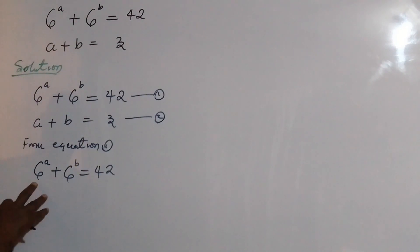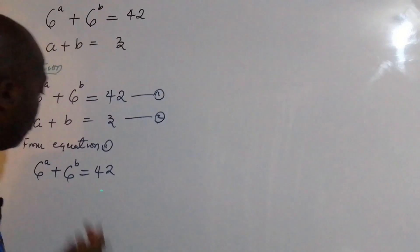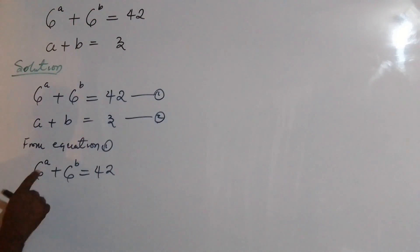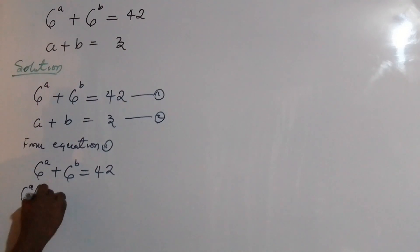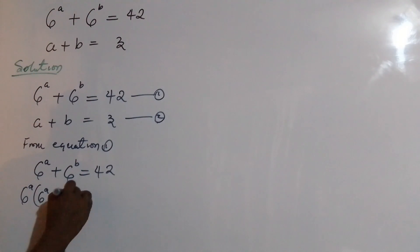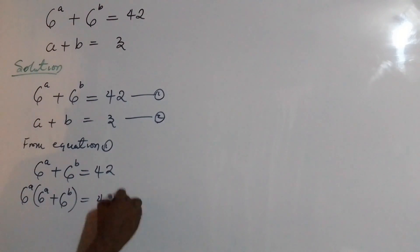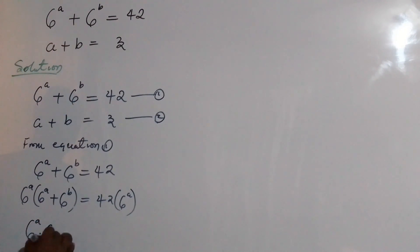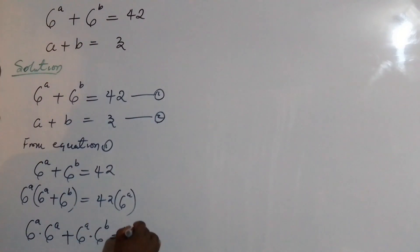What I'm going to do now is multiply both sides of the equation by 6 to the power of a. I could also choose to multiply by 6 to the power of b — it's still the same. So I have 6^a times (6^a + 6^b) = 42 times 6^a. Expanding the brackets on the left gives me 6^a · 6^a + 6^a · 6^b = 42 · 6^a.